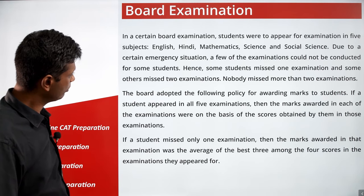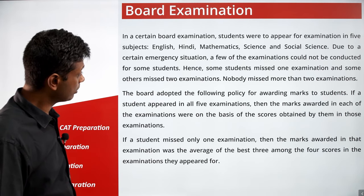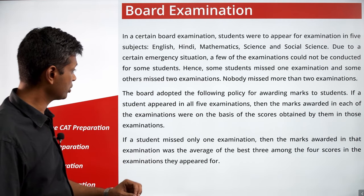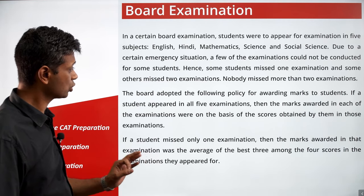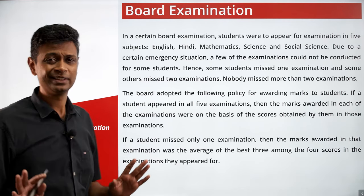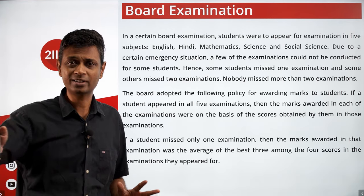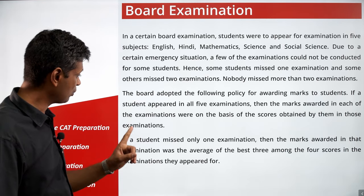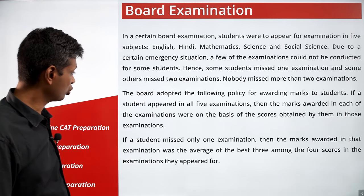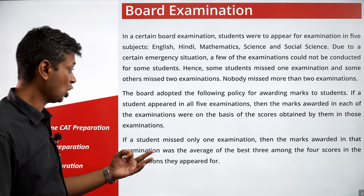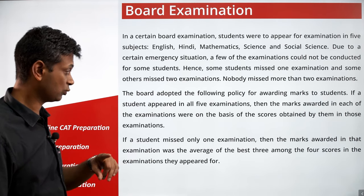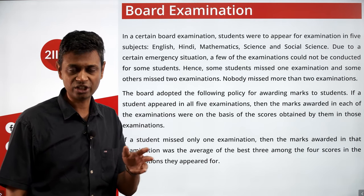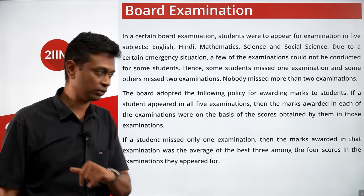The board adopted the following policy for awarding marks. If a student appeared in all five, marks were awarded based on scores obtained in those exams. If a student missed only one exam, the marks awarded in that exam was the average of the best three among the four scores. You attempt four, take the best three, take that average, and put that for the fifth one.